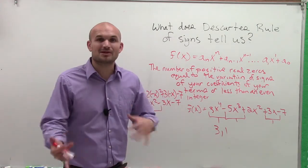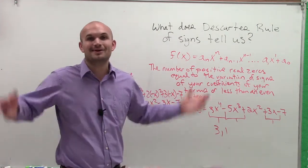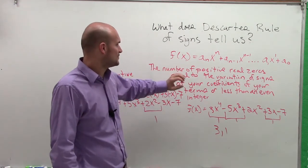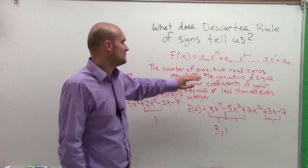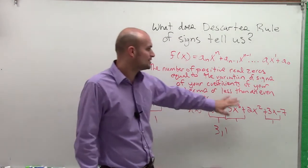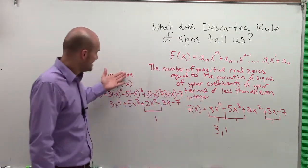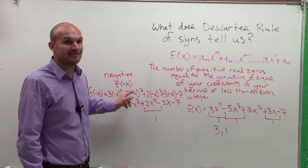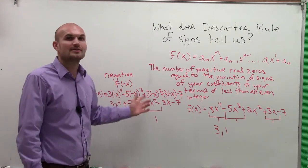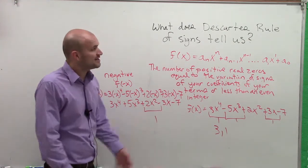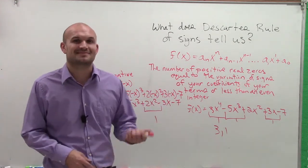I know it kind of got a little sloppy. I wasn't really planning on doing that, but I said, eh, you know, what the heck. So just remember, it's the number of positive real zeros is equal to the variation of signs of your coefficients or less than an even number. And for the negative, you have to do f of negative x, but still you're going to look for the alternate of signs. But therefore, I hope you understand Descartes' Rule of Signs. Thanks.